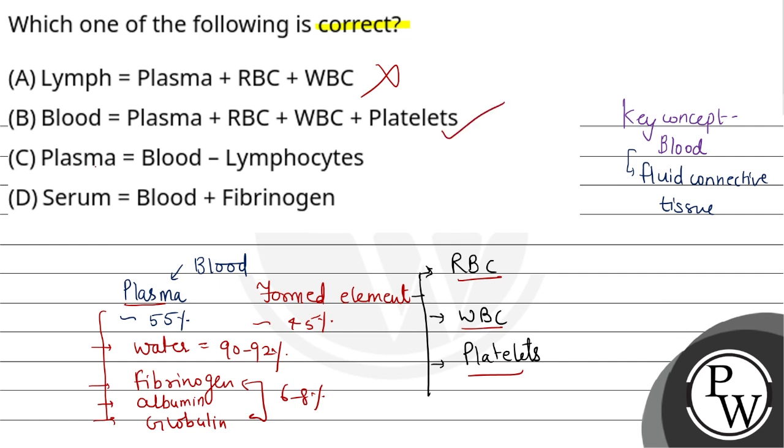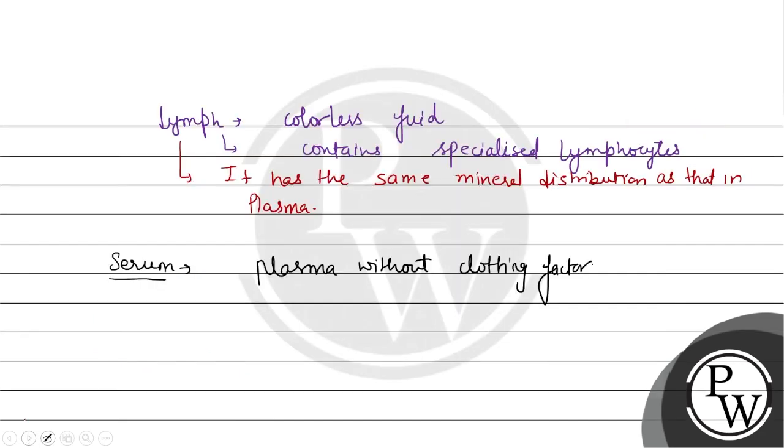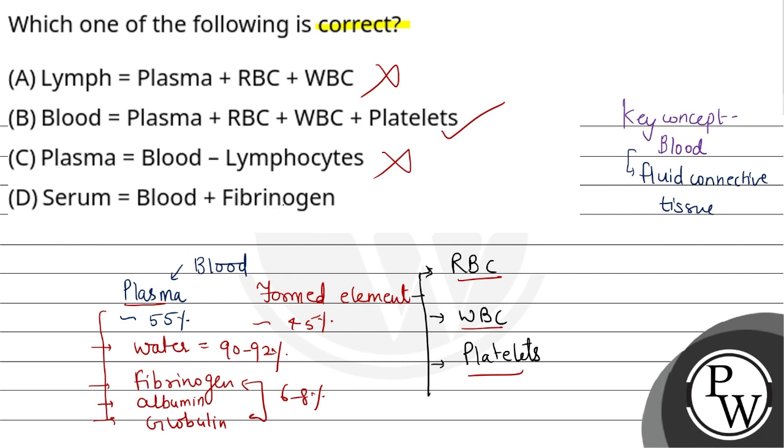They said plasma is blood minus lymphocytes. Look, from blood you have to minus all RBC, WBC, and platelets. Lymphocytes is one type of WBC, so you can't minus only lymphocytes. Serum - we just saw what serum is: plasma without clotting factor. Fibrinogen is the clotting protein, so it's not blood; you have to minus it from plasma. So serum is also incorrect here.